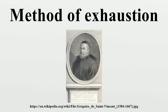Euclid used the method of exhaustion to prove the following six propositions in Book 12 of his Elements. Proposition 2: the area of a circle is proportional to the square of its radius. Proposition 5: the volumes of two tetrahedra of the same height are proportional to the areas of their triangular bases. Proposition 10: the volume of a cone is a third of the volume of the corresponding cylinder which has the same base and height. Proposition 11: the volume of a cone of the same height is proportional to the area of the base. Proposition 12: the volume of a cone that is similar to another is proportional to the cube of the ratio of the diameters of the bases.